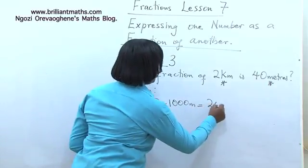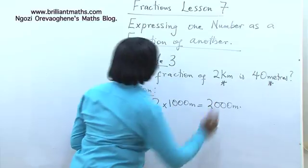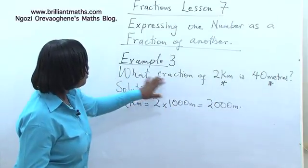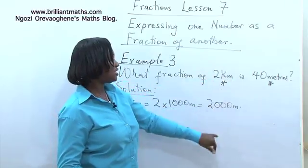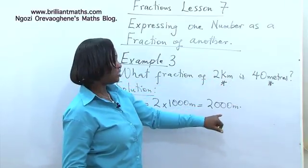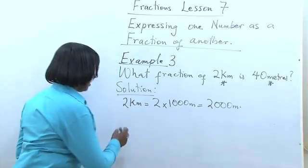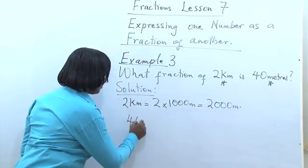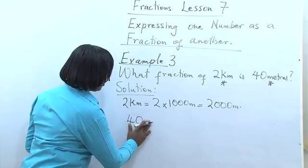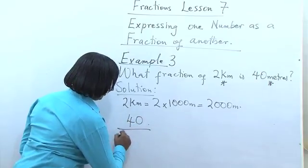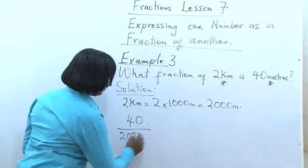So that's equal to 2,000 meters. The question is what fraction of 2 kilometers, so the denominator is 2 kilometers, which is 2,000 meters. So we want to find 40 meters over 2,000 meters.